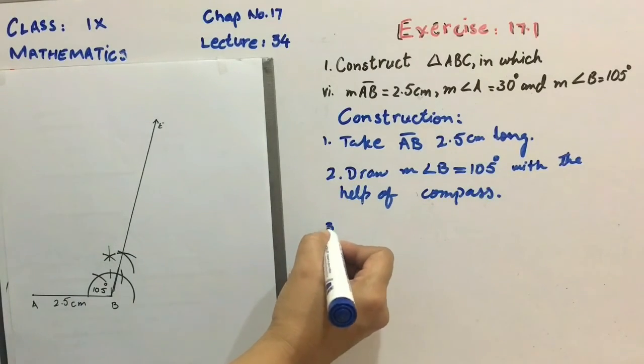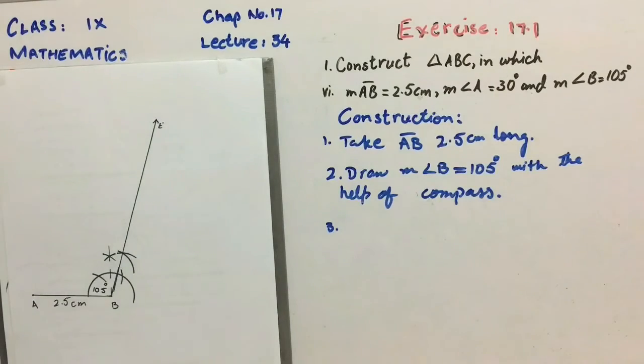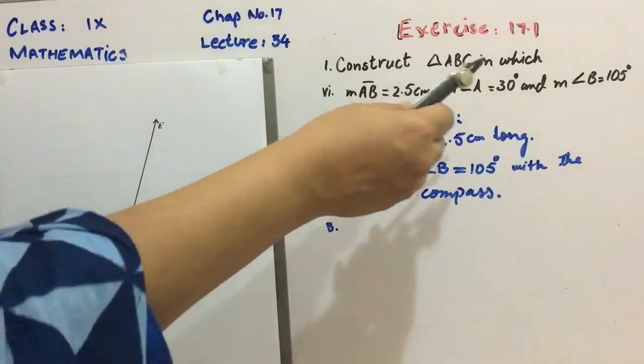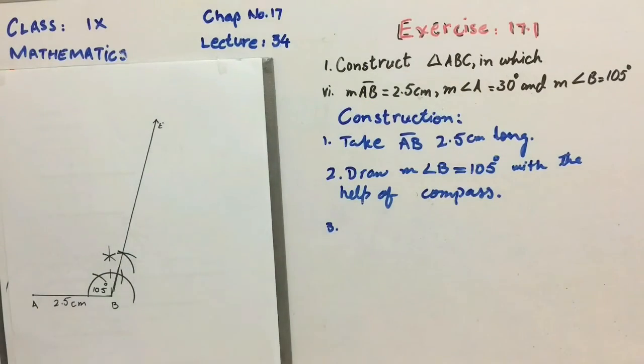Step number 3. Now the other angle is of 30 degree. Angle A is equal to 30 degree. For 30 degree angle we have to make an angle of 60 degree.